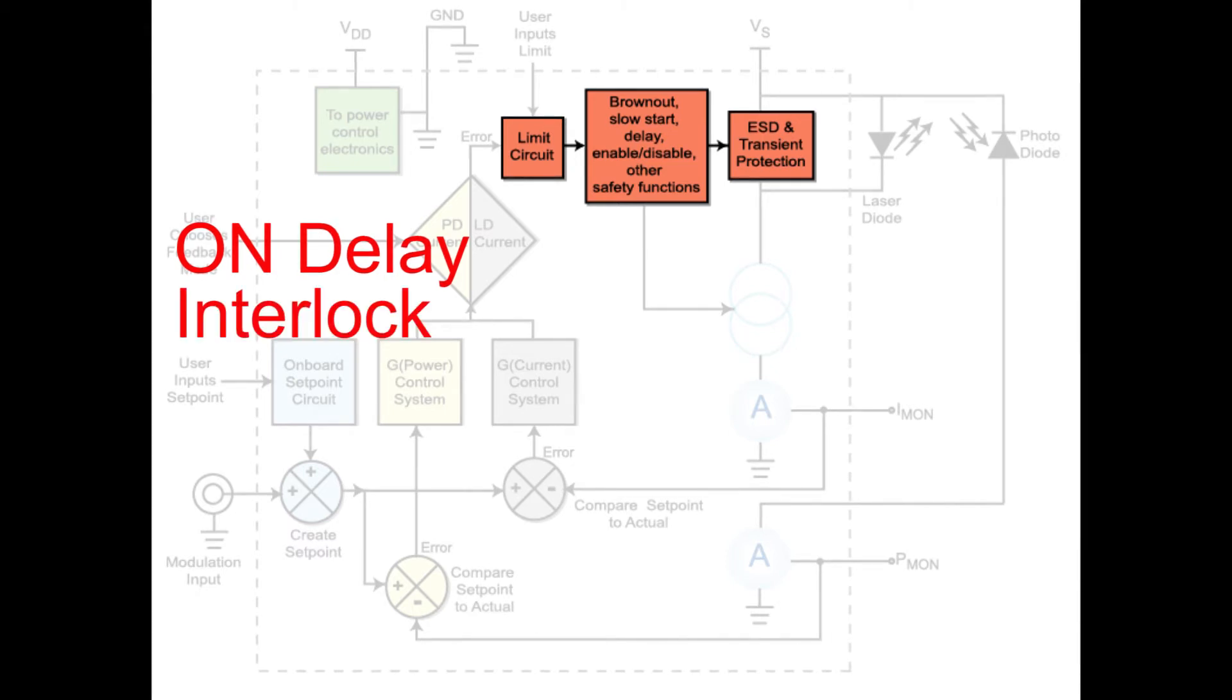Second, there must be a way to interlock protective housings or entry doors, so that if the housing or door is opened, the laser shuts off. Laser diodes are sensitive to thermal shock, so a slow start circuit is usually integrated.